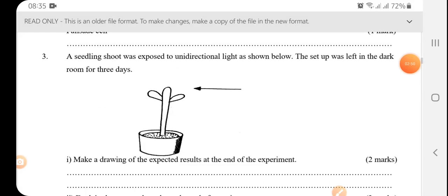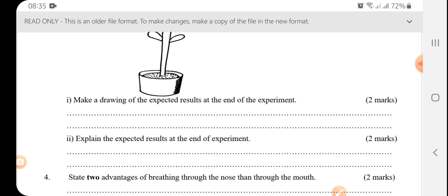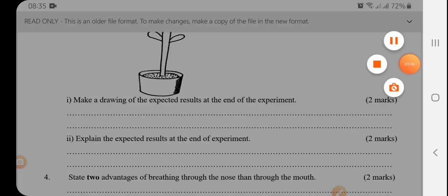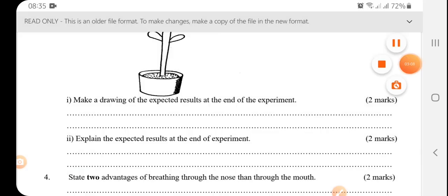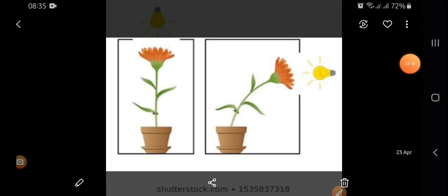A seedling shoot was exposed to unidirectional light as shown below. So unidirectional means light coming from one direction. And that source of light is indicated by the arrow. So make a drawing of the expected results. I'm going to show you using a picture. So this is what we expect. That the shoot will bend towards the light.